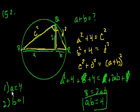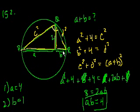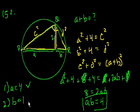Now we know: if A is 4, then B must equal 1, and A plus B is 5. So statement 1 alone is sufficient. Similarly, if we know B equals 1, then A must be 4, and A plus B equals 5. Statement 2 alone is also sufficient. That was actually less complicated than I expected going in.